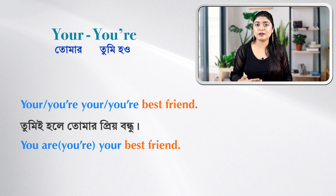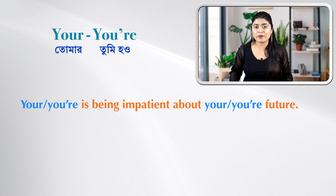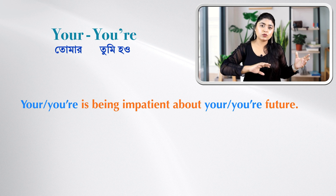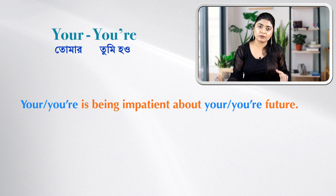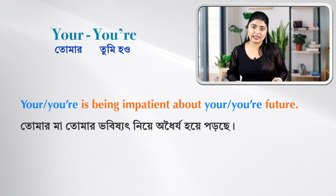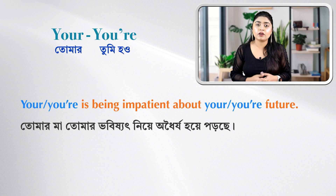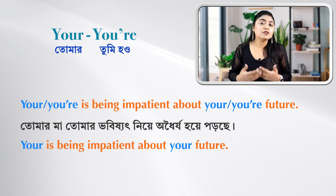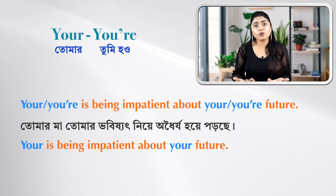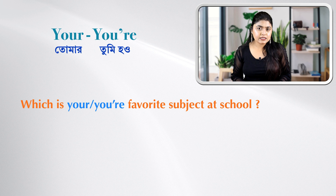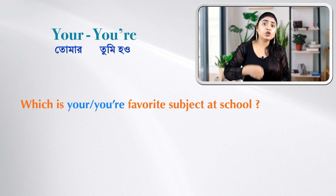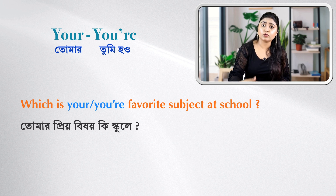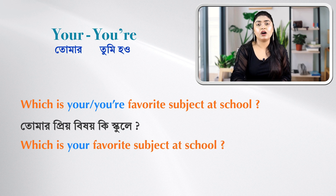Let's practice with some examples. Fill in the blanks with the correct form of 'your': 'You're the one to help yourself with your work.' Here 'you're' is 'you are' and 'your work' is your possession. Another example: 'Your mother is being impatient about your future' — both use Y-O-U-R. And 'Which is your favorite subject at school?' — again Y-O-U-R, meaning belonging to you.